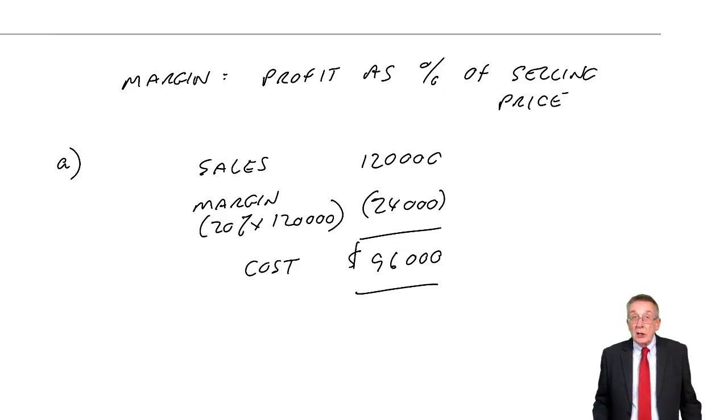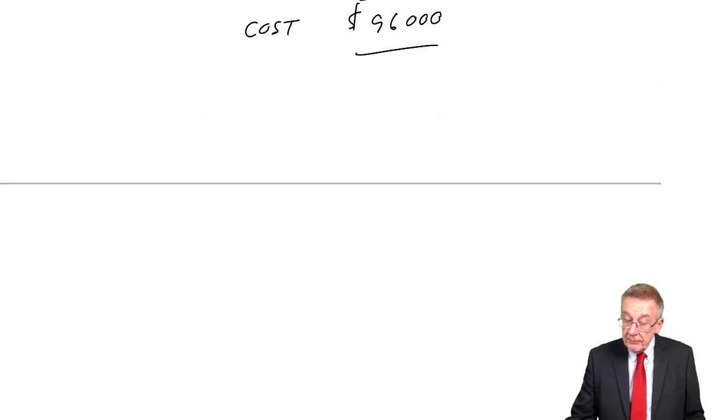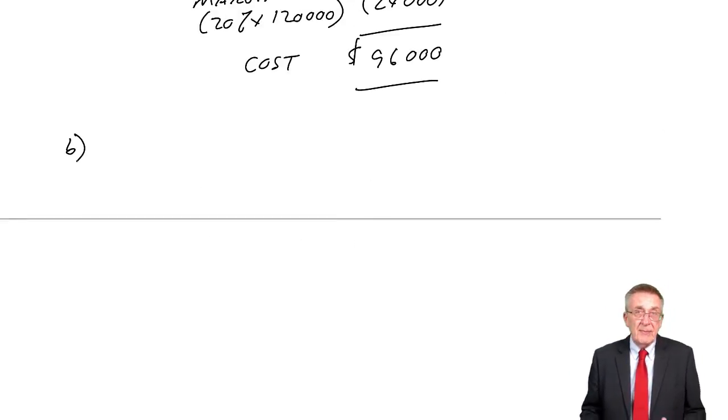So again, apart from terminology, that I think is nice and easy, but make sure you're clear about the difference. Markup is a percent of cost. Margin, or gross profit percentage, is a percentage of selling price. But again, they can have you apply that, as you understand, backwards. Look at B.